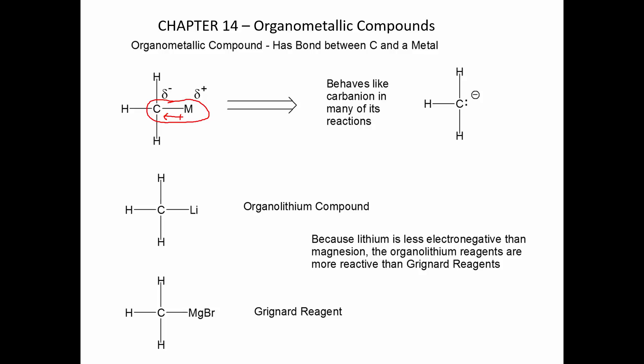The less electronegative the metal, or the more electropositive the metal, the more negative charge character there is at carbon. So when we look at metals on the far left side of the periodic table, we can make the loose connection that the reactions they do kind of resemble what the free carbon anion would do. Most of the reactions we're going to talk about involve two types of organometallics shown here.